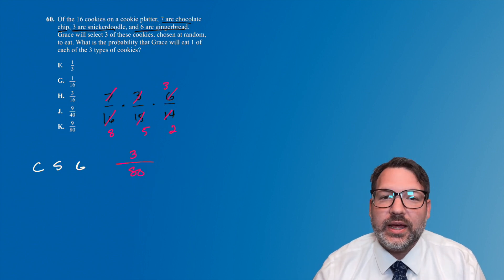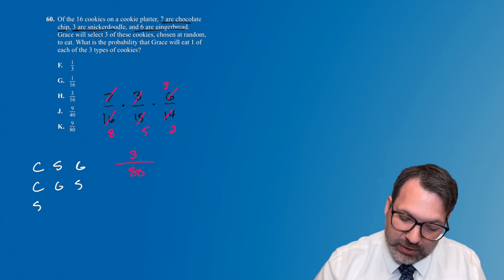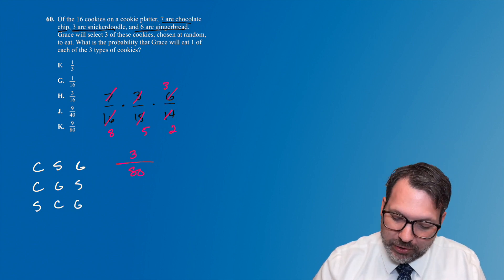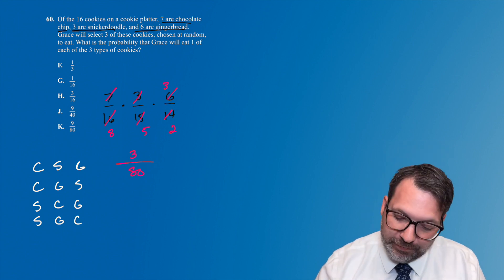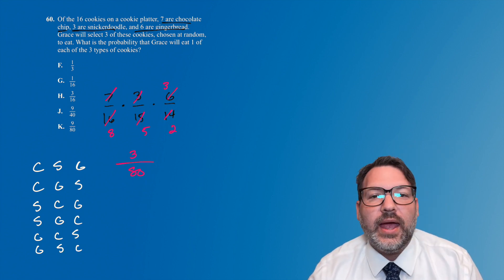There's no special reason it has to go chocolate chip cookie, snickerdoodle, then gingerbread cookie. It could just as easily be chocolate chip cookie, gingerbread, then snickerdoodle, or for that matter, snickerdoodle could have been first, and then there are two ways to arrange the chocolate chip cookies and the gingerbread cookies, or finally, of course, the gingerbread cookies could have gone first, and then we have two different arrangements of the chocolate chip cookies and the snickerdoodles.